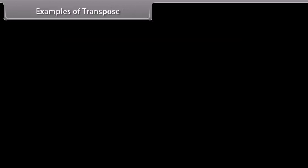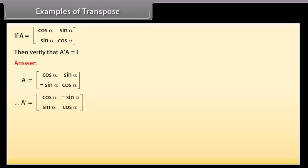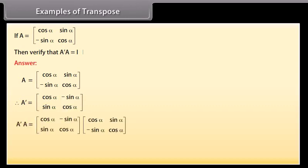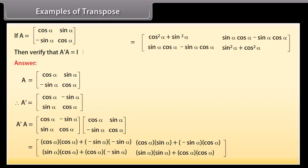Example of transpose. If A is given, verify that transpose of matrix A multiplied by matrix A equals the identity matrix. A is given. Therefore, its transpose A' is the matrix with first row cos α, −sin α and second row sin α, cos α. Multiplying A transpose and A and solving, we get A'A equal to identity matrix. Hence verified.